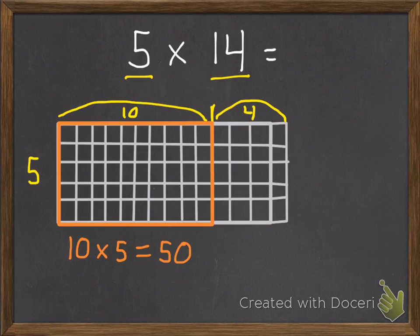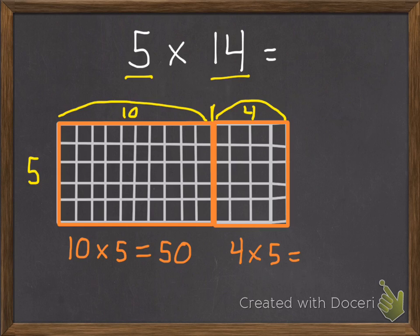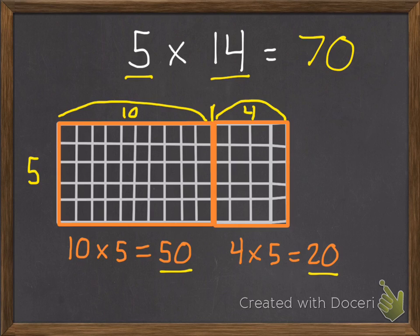And doing 10 times 5 is a lot quicker than having to count them all. Then my second box is 4 along the top and 5 along the sides, so 4 times 5. That's going to equal 20. Add my two parts together: 50 plus 20. And there are 70 boxes in my array. So 5 times 14 equals 70.